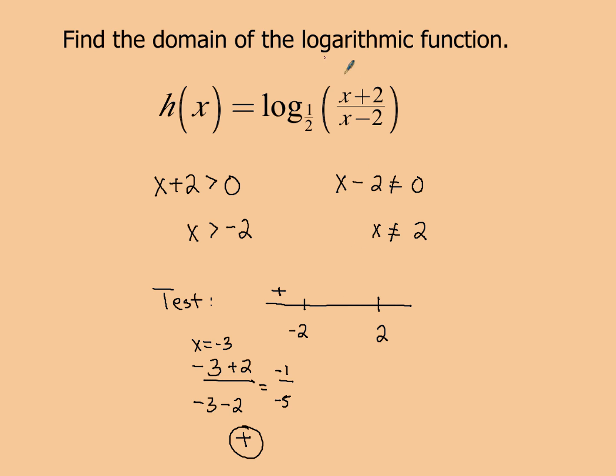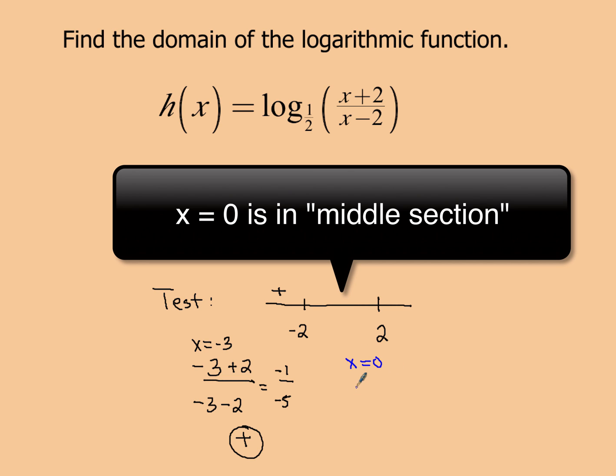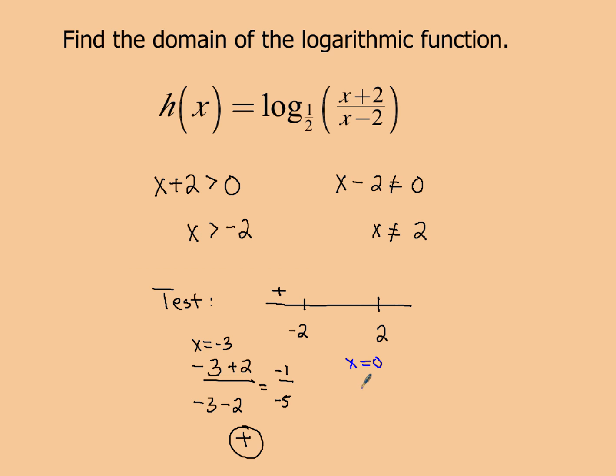Now in our middle section here, if I plug in a number between negative 2 and positive 2, so this time I'm going to say let x be 0. So when you plug in 0, in the numerator you'll just get 2, and in the denominator you'll get negative 2. That gives me a value that's negative. So in this area right here, between negative 2 and 2, that is negative, which implies that that is not a solution because we have a negative value within that region, so that is not positive.